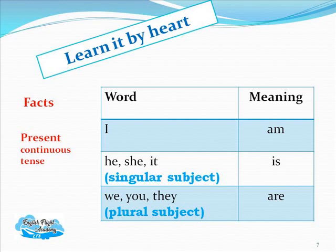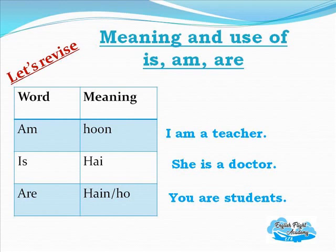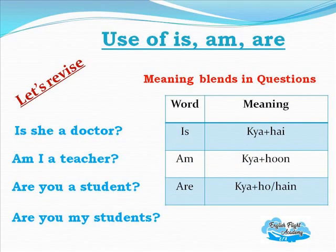Let's revise: 'I' and 'we' take 'am'/'are' — I am, we are. 'He', 'she', 'it' take 'is'. So: I am a teacher, she is a doctor, you are students.